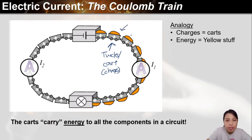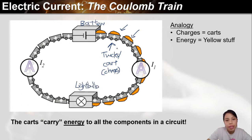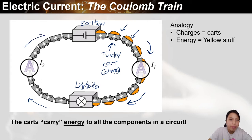The first analogy is: every charge is like a cart, and each cart is carrying yellow stuff — that's what we call energy! So the charge is carrying energy from the battery source to something — let's say a light bulb. These charges are flowing and flowing. You have a certain current measured by the ammeter.